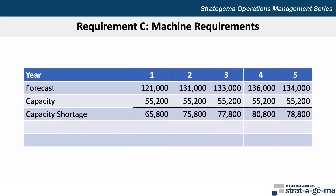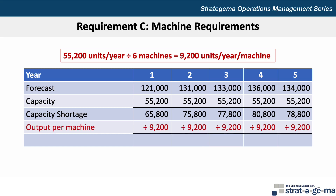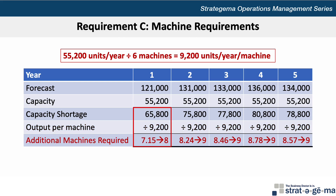For requirement C, to determine how many additional machines are required, we start with the capacity shortage calculations for each year from requirement B. Next, we determine the capacity of each machine. Since the annual capacity is 55,200 units per year across 6 machines, that works out to 9,200 units per machine. Dividing the capacity shortage amounts by 9,200 units per machine tells us how many additional machines are required. For year 1, the capacity shortage of 65,800 units divided by 9,200 units per machine works out to 7.15 additional machines, but since we can't purchase a partial machine, we must round up to 8 machines.